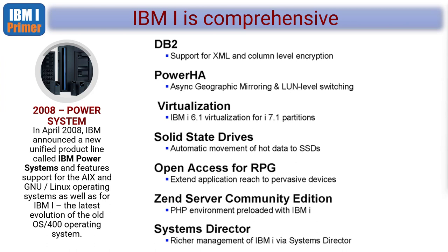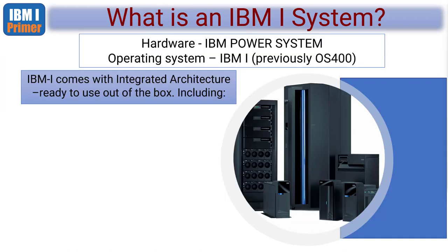It has a Systems Director built in. IBM finally realized that management doesn't want to look at reams of paper printed on old tractor-driven printers — they want nice graphical displays showing what the system is doing, storage levels, and the reasoning behind upgrades. Systems Director is pretty neat. So: the hardware is called the IBM Power System and the operating system within that hardware is called IBM i.